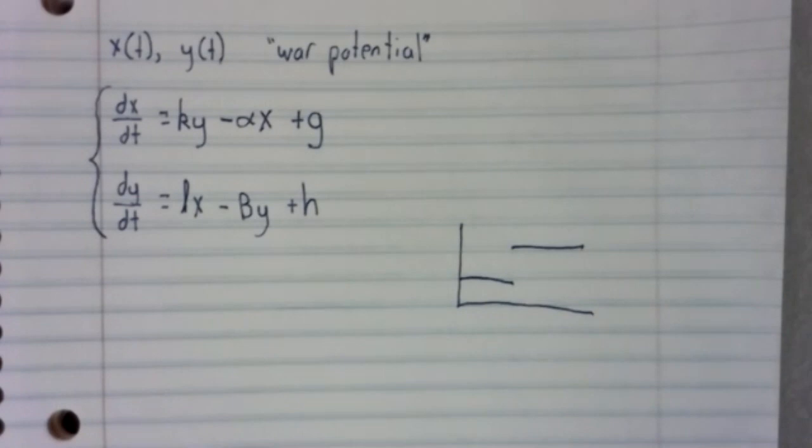The power of this model is that we can use it no matter who is correct. If you think the grievance terms are important and the growth of armaments isn't, make the grievance terms large and the armament terms small. If you think the growth of armaments are the deciding factor, you can make the grievance terms small or even zero.